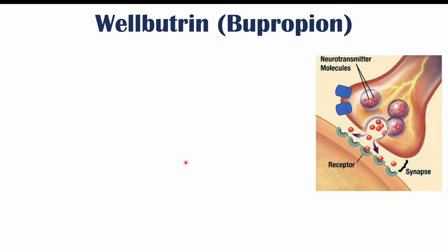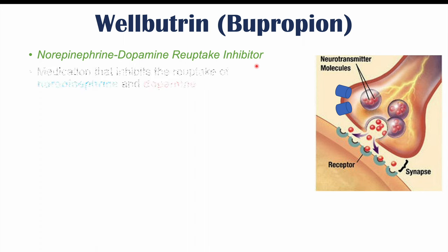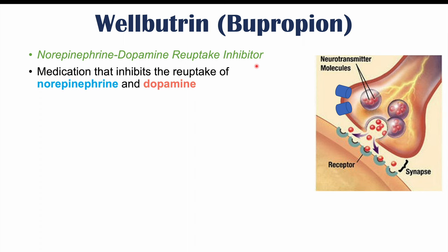Before we talk about the side effects, let's talk about what Wellbutrin is and what it does. Wellbutrin is in the class of medications known as norepinephrine dopamine reuptake inhibitors. It is a medication that inhibits the reuptake of norepinephrine and dopamine — it inhibits the reuptake of both of these types of neurotransmitters.